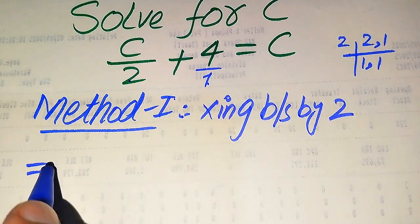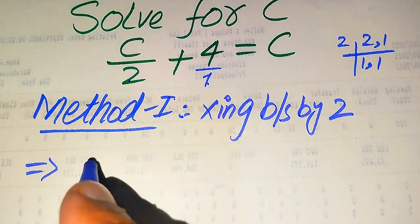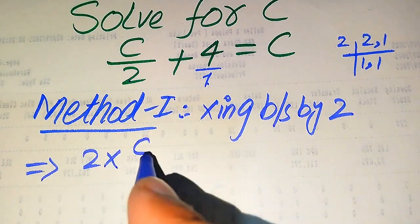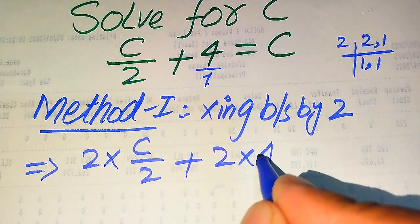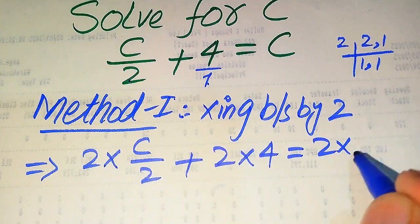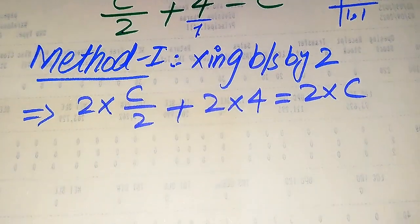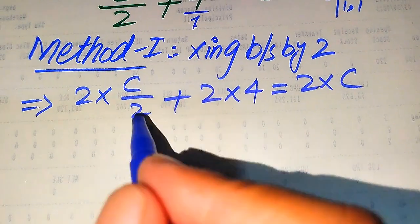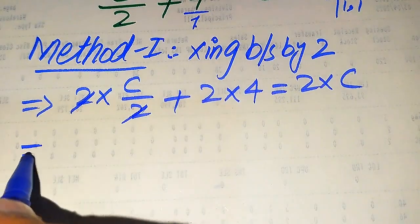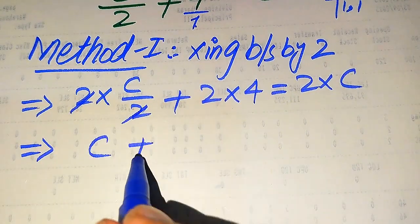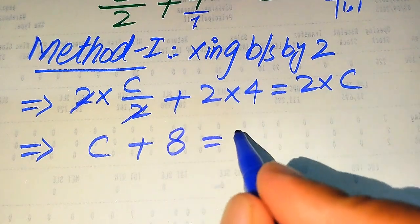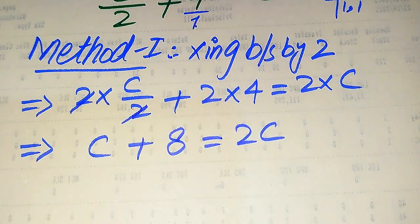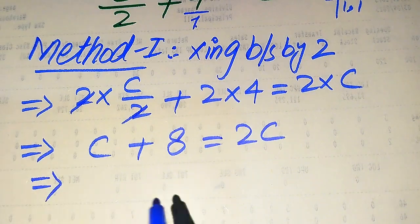When we multiply each of these terms by 2, it is written as 2 multiplied by C divided by 2, plus 2 multiplied by 4, equals 2 multiplied by C. After multiplication, this 2 is cancelled out by the 2 in the denominator, and we obtain C plus 8 equals 2C. We move the variable terms to the right hand side.